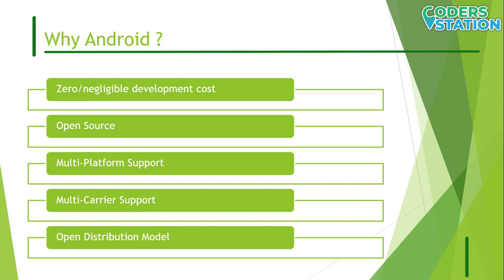The third reason is multi-platform support — there is a wide range of hardware devices powered by Android OS, and development can occur on Windows, Mac OS, or Linux. The fourth reason is multi-carrier and hardware support worldwide, with telecom carriers like Airtel, Vodaphone, Idea Cellular, AT&T Mobility, VSNL, etc. supporting Android phones. The fifth reason is the open distribution model — the Google Play Store has very few restrictions, and developers can also distribute through other channels like the Amazon App Store.